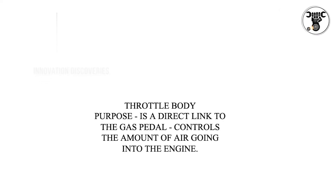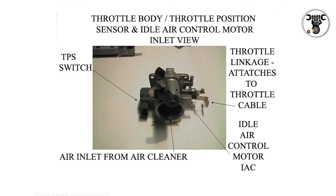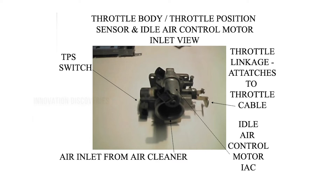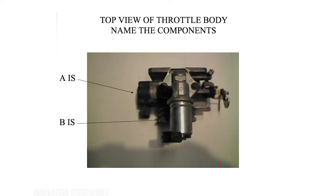Throttle body purpose: is a direct link to the gas pedal and controls the amount of air going into the engine. Components shown include the throttle body, throttle position sensor, idle air control motor, shown from inlet view, top view, and side view.